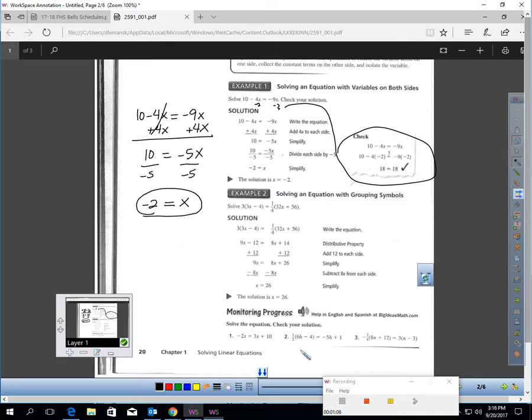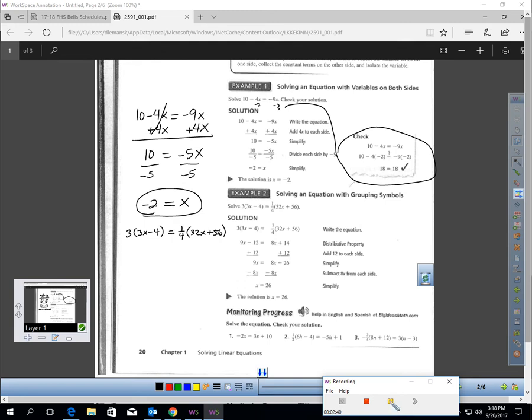Let's go to example two. Step one, simplify each side if we can. We can. We've got to distribute here.